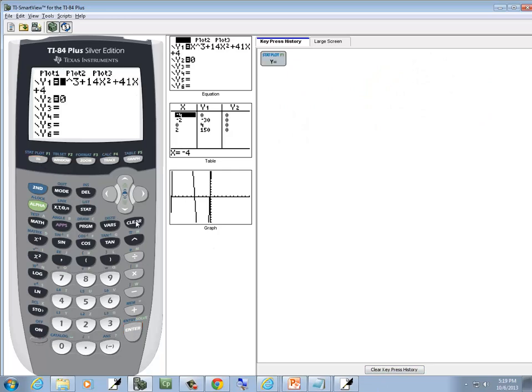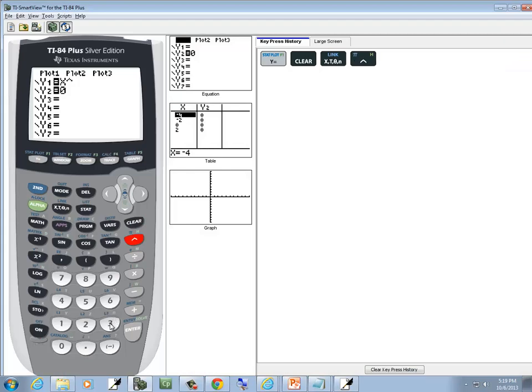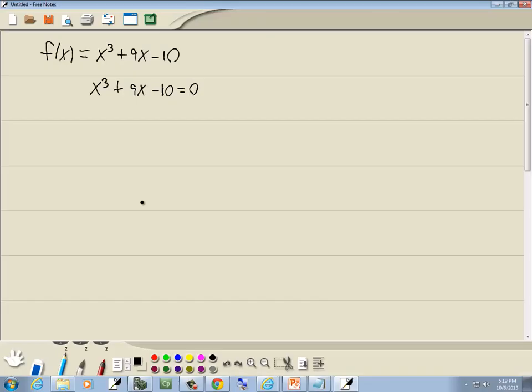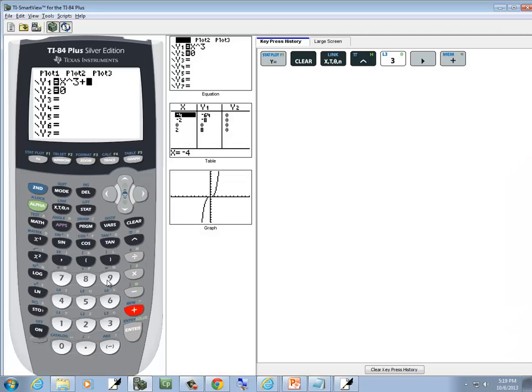So I'll press y equals, press clear, and we've got x to the third, so do x carat 3. If you're on a TI-84, remember to do a right arrow key to get out of exponent mode. Plus 9x minus 10.